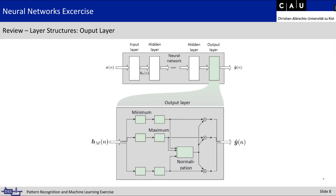The output layer is the last layer in our neural network. Its input is the vector hm of n — the output of the last hidden layer, where m is the number of hidden layers. In the output layer we can apply normalization or limit our output to a specific range, for example plus or minus 1, by calculating the minimum and maximum to normalize our outputs. This is important when our desired output features need to be within a specific range.